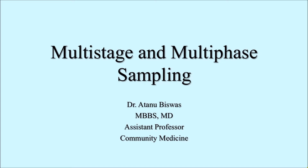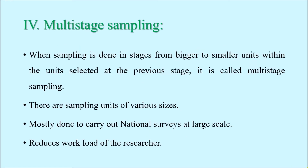Today we are going to discuss two more probability sampling techniques: multi-stage sampling and multi-phase sampling. Often while conducting any research or study we follow these two types of techniques. We shall start with multi-stage sampling. It is done at multiple stages, as the name suggests. First we start with bigger sampling units from which we collect our samples, and from these bigger sampling units in subsequent stages we find the smaller units.